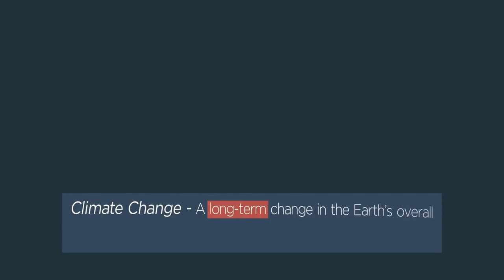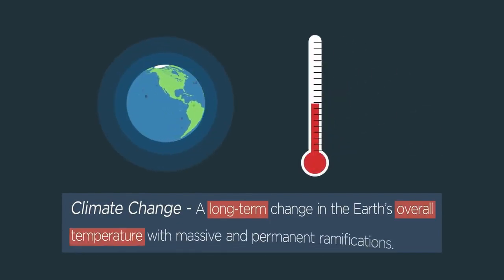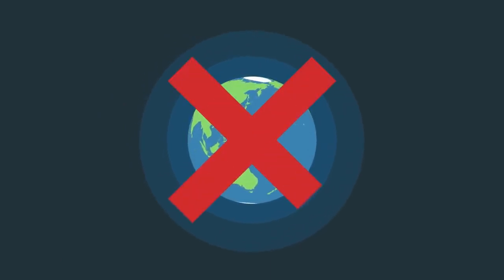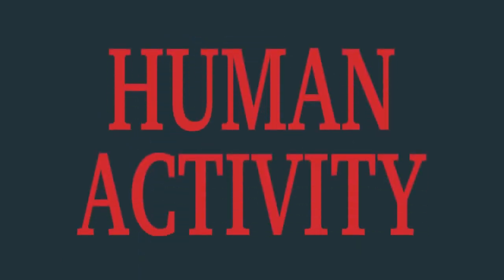Well, what exactly is climate change? Climate change is defined as a long-term change in the Earth's overall temperature with massive and permanent ramifications. Climate scientists believe that this isn't caused naturally by the Earth, but by human activity.